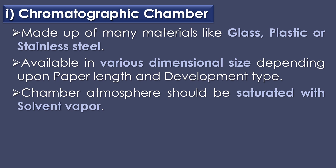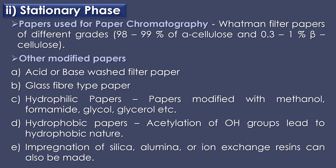The chamber atmosphere should be saturated with the solvent. The second component is the stationary phase. In paper chromatography, the stationary phase is paper. Whatman filter paper of different grades like No. 1, 2, 3, 4, 20, 40, 42, etc. are used. The paper contains 98 to 99% of alpha cellulose and 0.3 to 1% of beta cellulose.